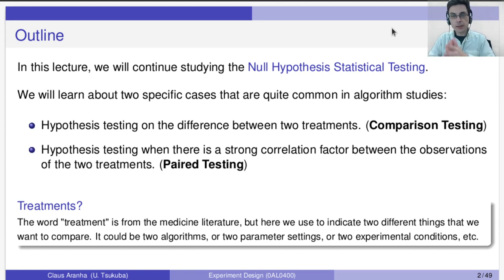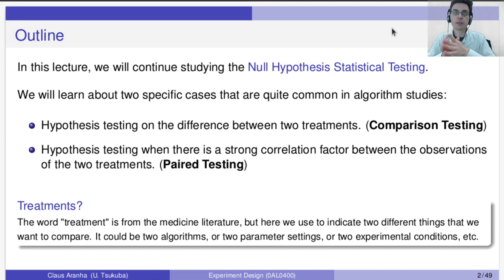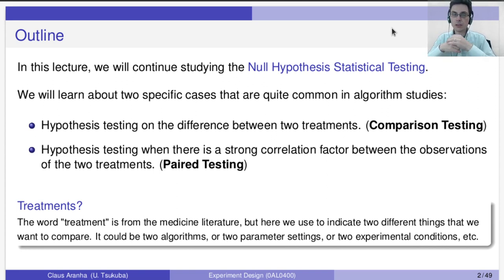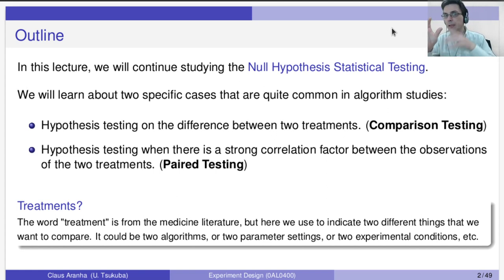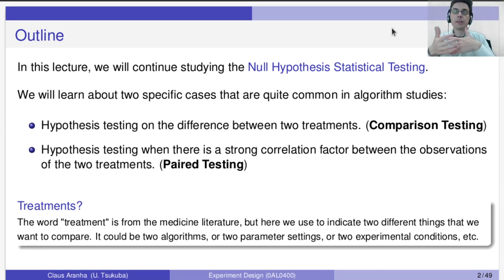In this text sometimes you're going to hear the word 'treatments.' When you look in statistical textbooks, you'll also see this word. The word treatment comes from the medicine literature, but in general it means different techniques that you're comparing. For instance, if you're using algorithm A and algorithm B to solve a problem, these algorithms are your treatments. When you hear 'treatment,' think about the things that we are comparing.